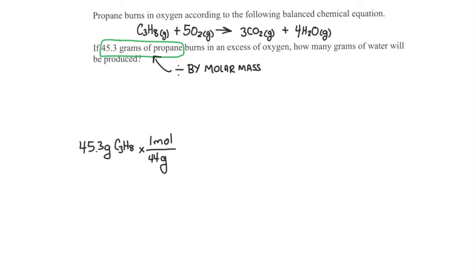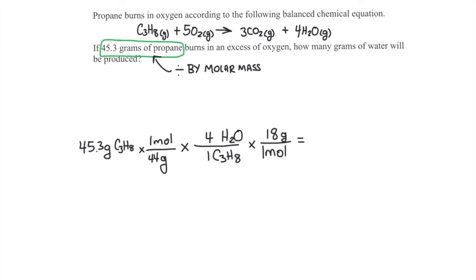Now we need the mole ratio to compare the unknown to the known. We're solving for water and we know propane, so there are 4 moles of water for every 1 mole of propane. Finally, we want to convert this answer to grams. To convert from moles to grams, we multiply by the molar mass of the substance. The question asks for the mass of water, so we multiply by the molar mass of water. Water has one oxygen (molar mass 16) and two hydrogens (molar mass 1 each), so 16 plus 2 gives us 18. 45.3 divided by 44, times 4 over 1, times 18 gives us 74.1 grams of water.